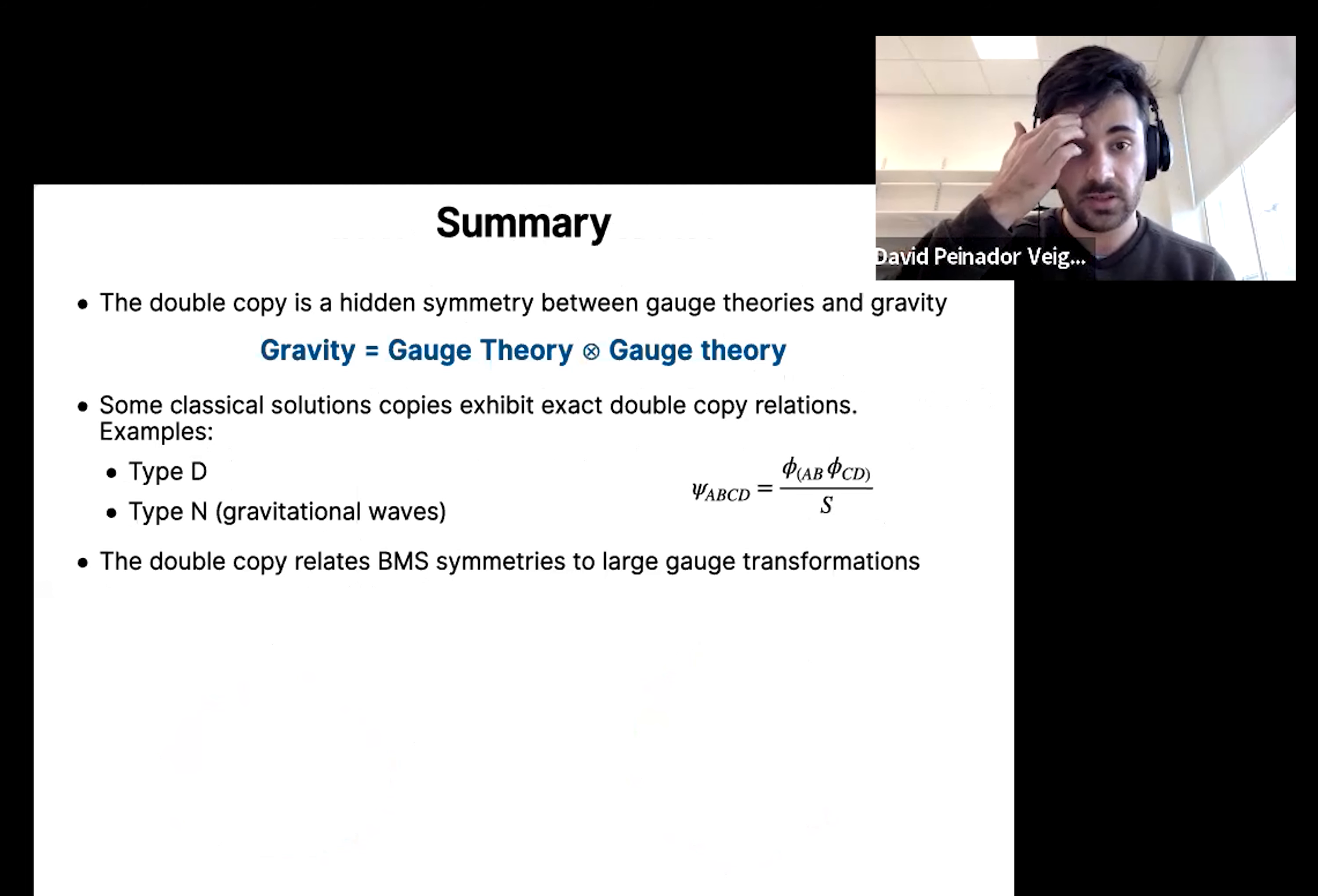And with that, I'm going to finish. This is my summary slide. You see that we've introduced the double copy and we've explored cases where classical solutions exhibit a double copy-like structure. And in the very last slide, we simply try to understand how symmetries map from gauge theory to gravity using this map. Thank you.